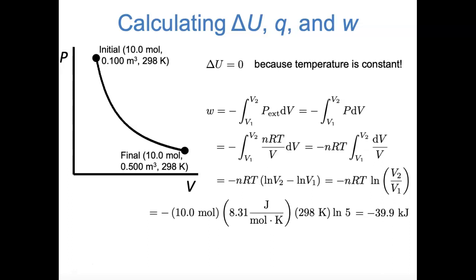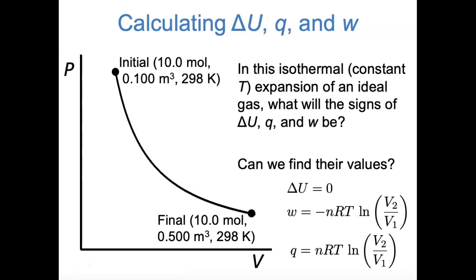This is how the process typically goes when finding quantities in the first law: we solve for two of them—here ΔU and W—and find the third from the first law. Since ΔU = Q + W, and we already found ΔU = 0 and W = −39.9 kJ, we can easily find Q = +39.9 kJ. These values are general for any isothermal expansion or compression of an ideal gas.